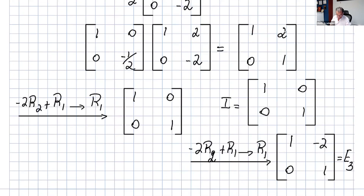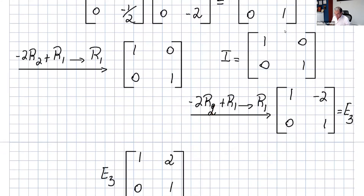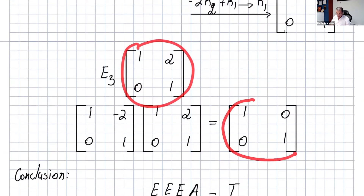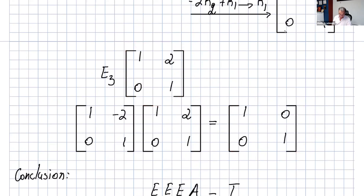Now to eliminate the 2 in position (1,2), apply -2R2 + R1, changing R1 to get the identity matrix [[1,0],[0,1]]. Start with I, apply -2R2 + R1 to get E3 = [[1,-2],[0,1]]. Multiplying E3 by the last matrix gives the identity matrix.